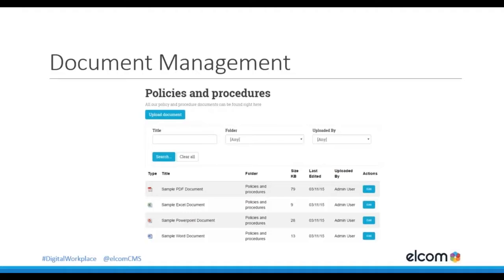A document list module can be added to any page of an intranet and it can bring in documents from different areas depending on preferences and security permissions. For example, the HR section of the intranet could have a document list showing a range of HR documents, policies and procedures. If you have a long list of documents, you can add filters or searches to improve the user experience. One of the key benefits is that it provides a central document repository that is easy to access, and it also removes that reliance on a file share which is difficult to access if you are out and about on the road.